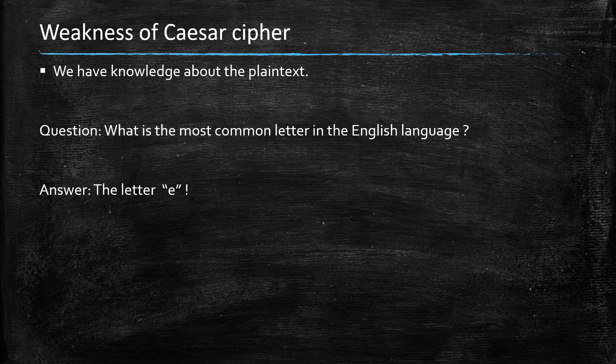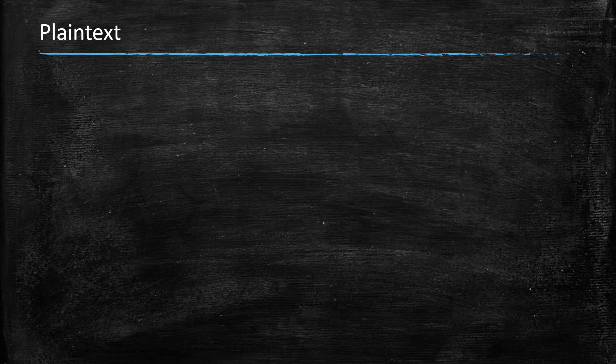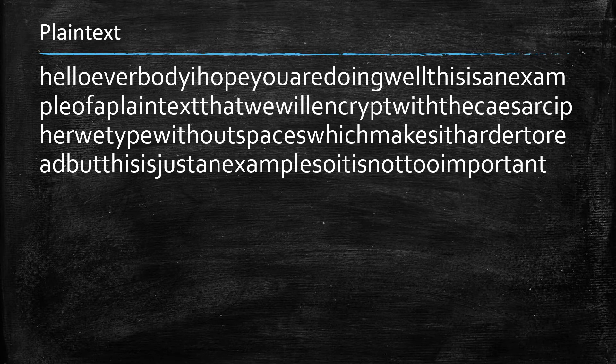The most common letter in the English language is the letter E. And what it means is that because the shift is the same for all letters, the letter that will be appearing the most in the ciphertext is most likely to be the encryption of E, which gives away the shift automatically.